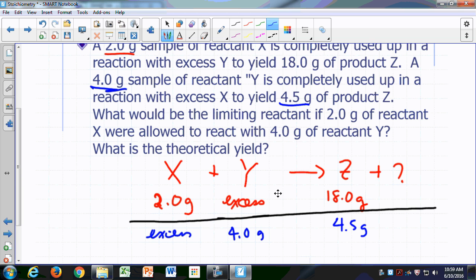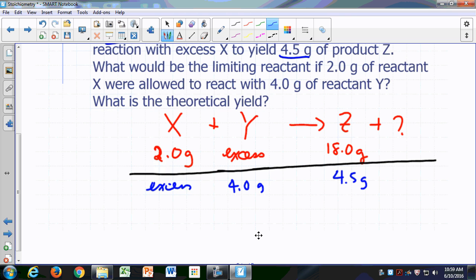So you say then, if Y is the limiting reactant, then using up 4 grams of Y with excess X still available, you only get 4.5 grams of Z. So when you run out of the 4 grams of Y, reaction will have to stop. 4.5 grams of Z is the theoretical yield.